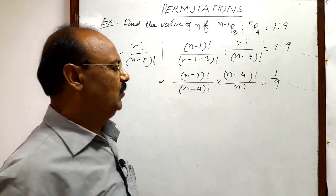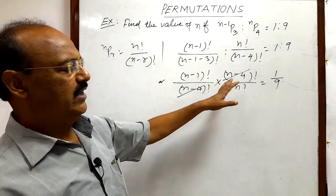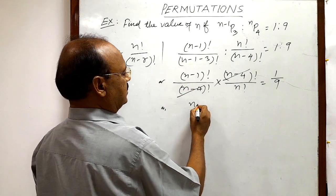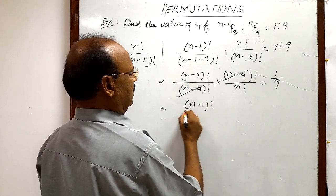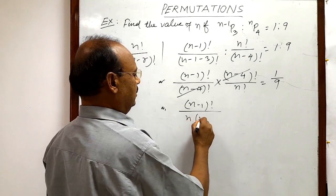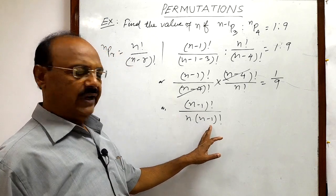Now you see here (n-4)! will be cancelled out from numerator and denominator. So now we are getting (n-1)! divided by n!. This n! can be written as n × (n-1)!...